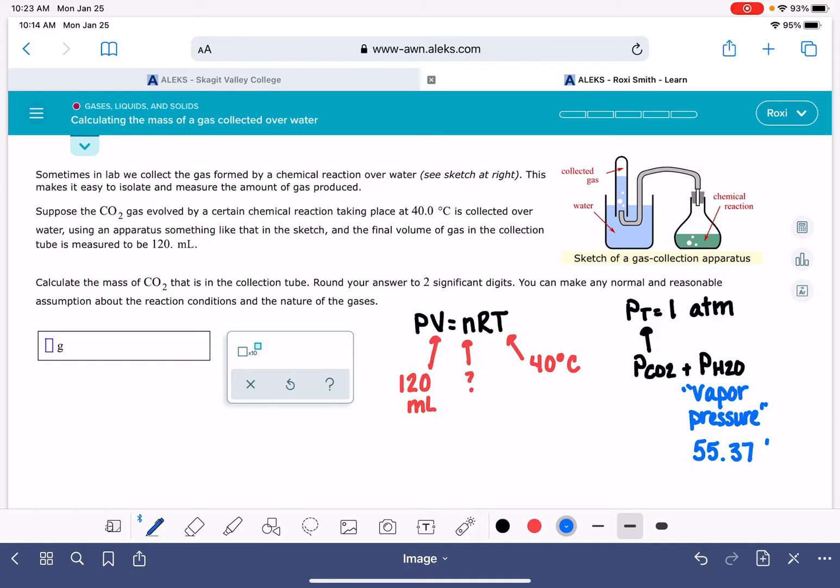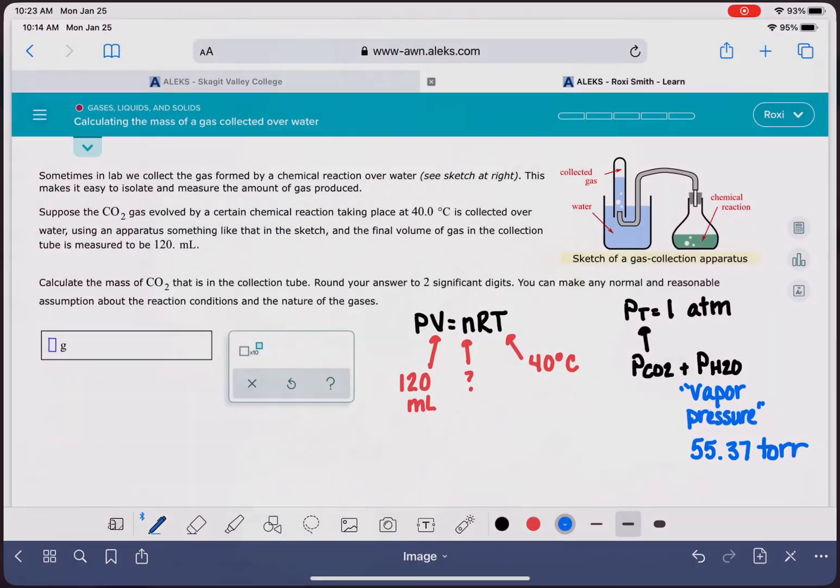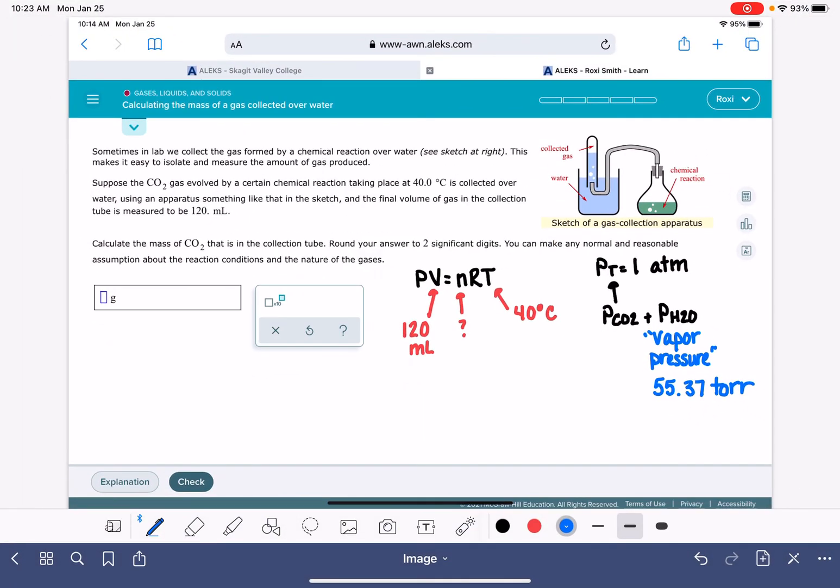55.37 torr. I want to double check that I copied that correctly. 55.37 torr. Now, we do have some inconsistencies with our units. The total pressure is one atmosphere and the vapor pressure is in units of torr. So the first thing I'm going to do is convert from torr to atmospheres. The vapor pressure in units of atmospheres is 0.07286.